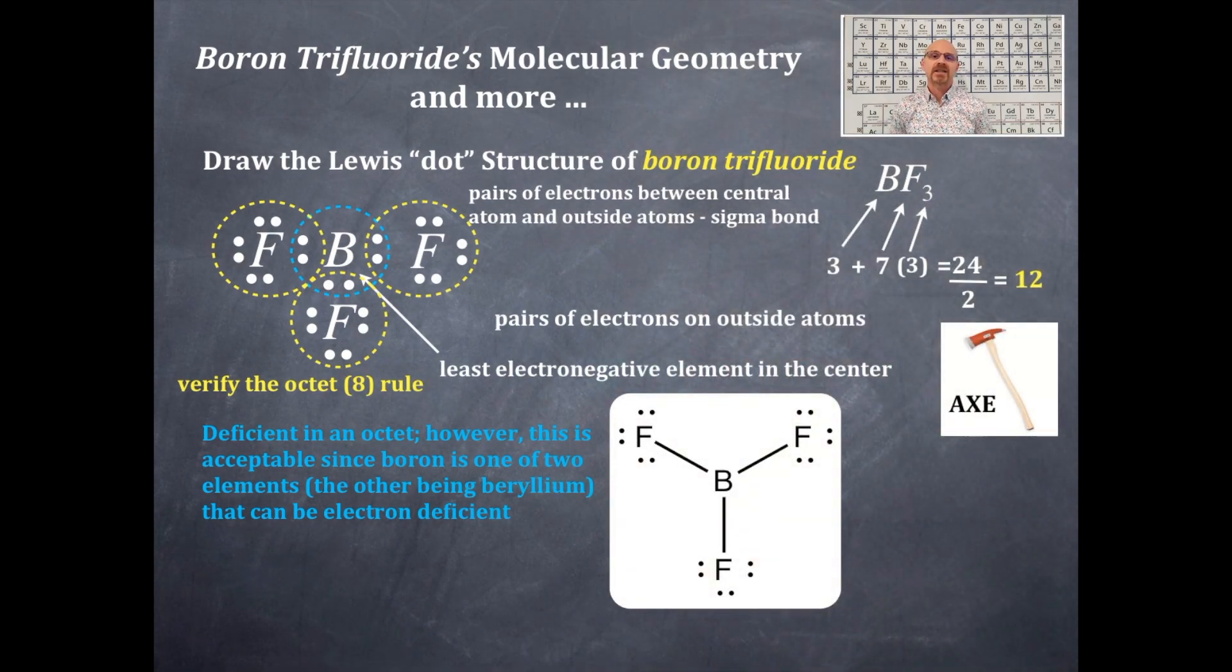The AXE structure - hopefully remember the AXE. The A for the AXE is the central element, that's the boron. There's only one A for this here. And the X for this are the bonding elements, those are the fluorines around that boron.